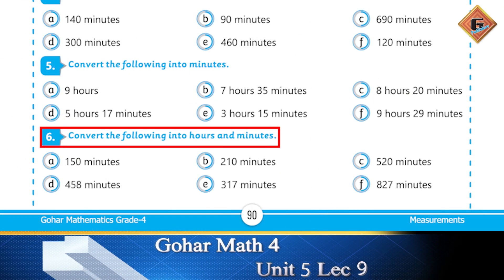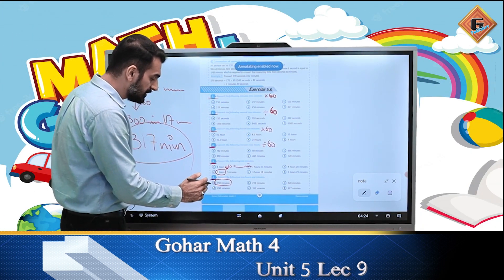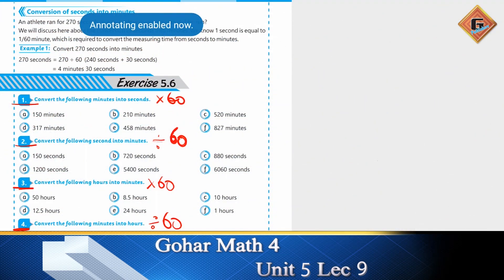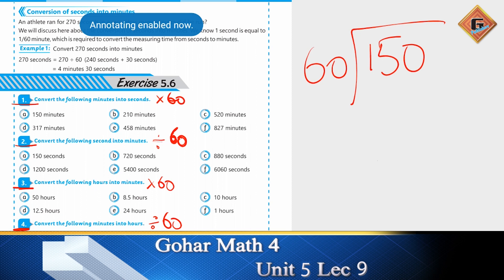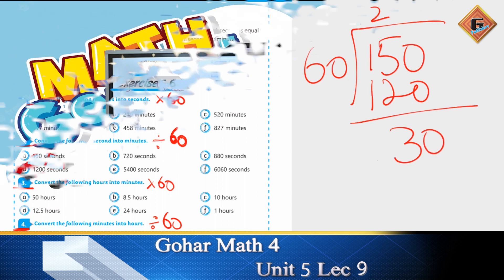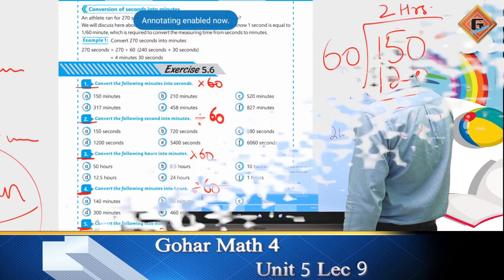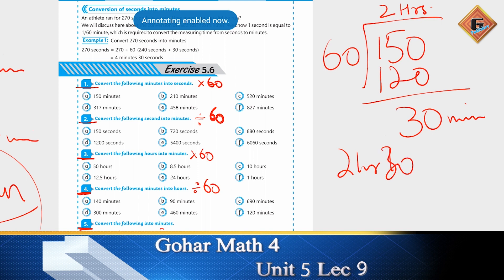Question number 6: convert the following into hours and minutes. आपके पास सिर्फ minutes हैं — इनको hours और remaining minutes में निकालना है। जैसे 150 minutes को 60 से divide करेंगे: 60 × 2 = 120, remainder 30। तो ऊपर वाला answer hours है और remainder minutes — यानि 2 hours 30 minutes आपका answer होगा।